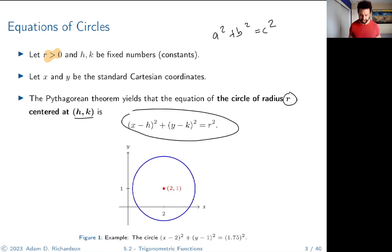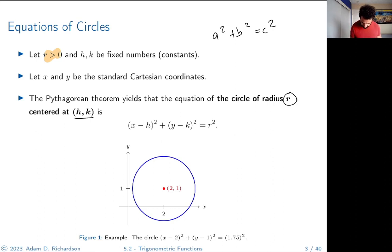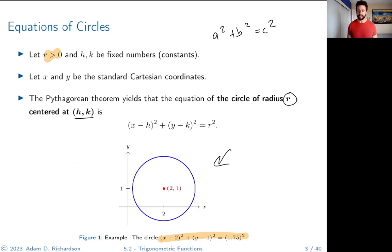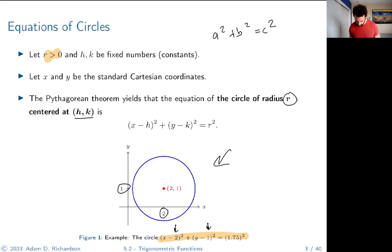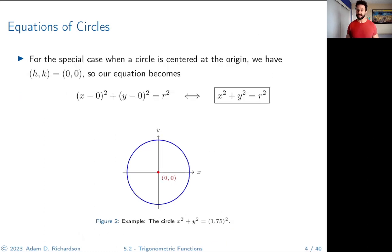The equation of a circle of radius r centered at (h, k) is (x−h)² + (y−k)² = r². Here's an example: a circle centered at (2, 1) with radius 1.75 has equation (x−2)² + (y−1)² = 1.75². The x−2 reflects the horizontal shift to 2, y−1 reflects the vertical shift of 1, and 1.75 is the radius.